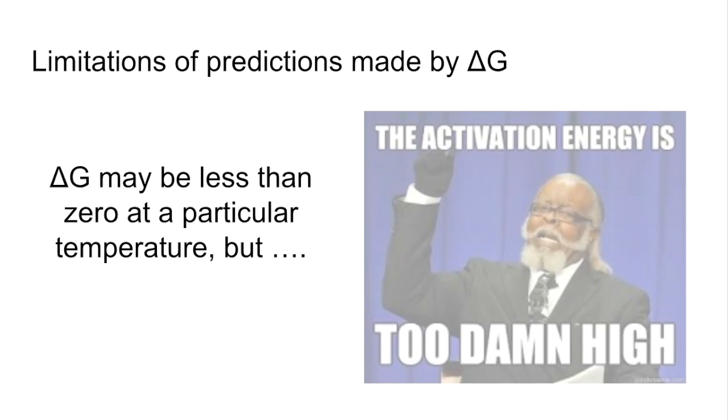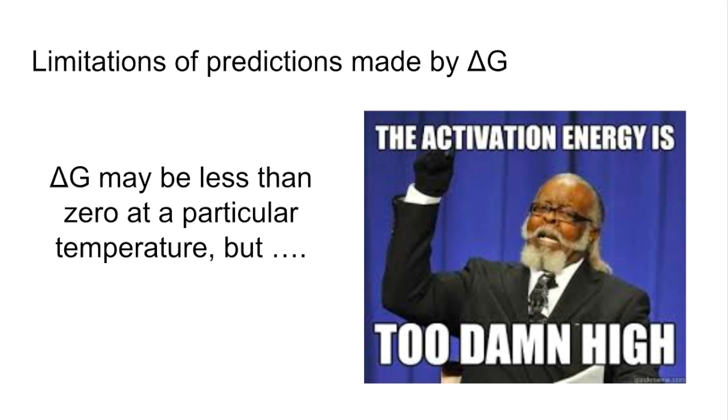We'll finish with limitations of predictions made by delta G. So you've calculated delta G, it's come out as negative. The process is looking feasible at that temperature but it's still not going. So what could be the reason for this? The activation energy is too high and stops the process from happening.